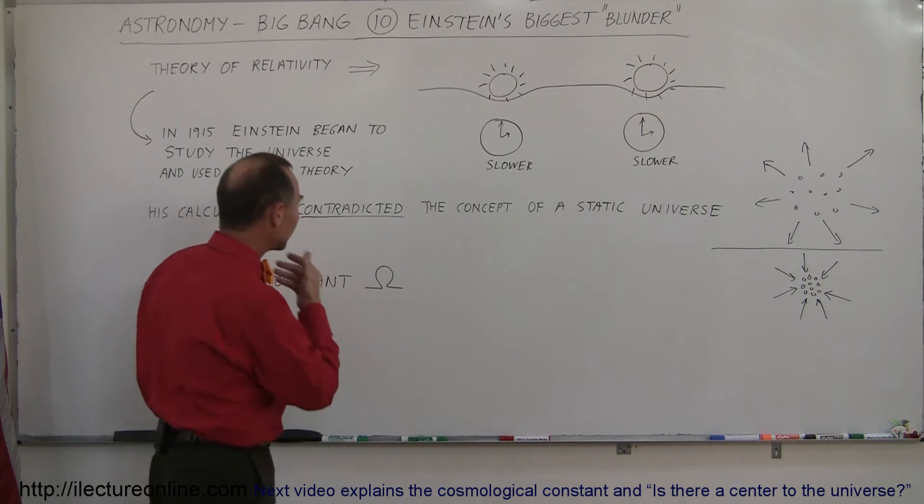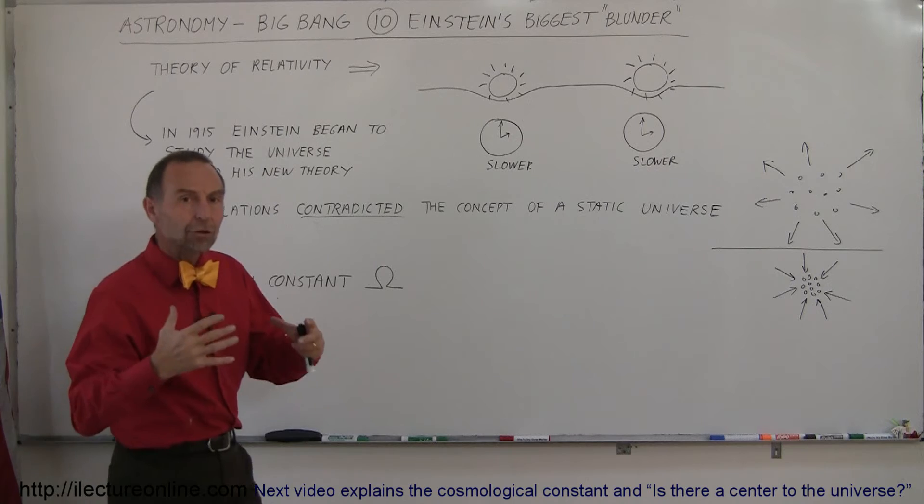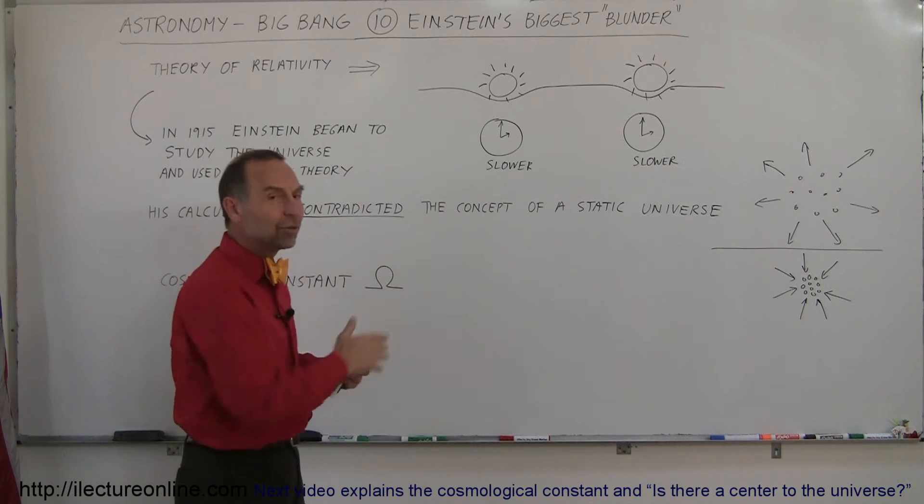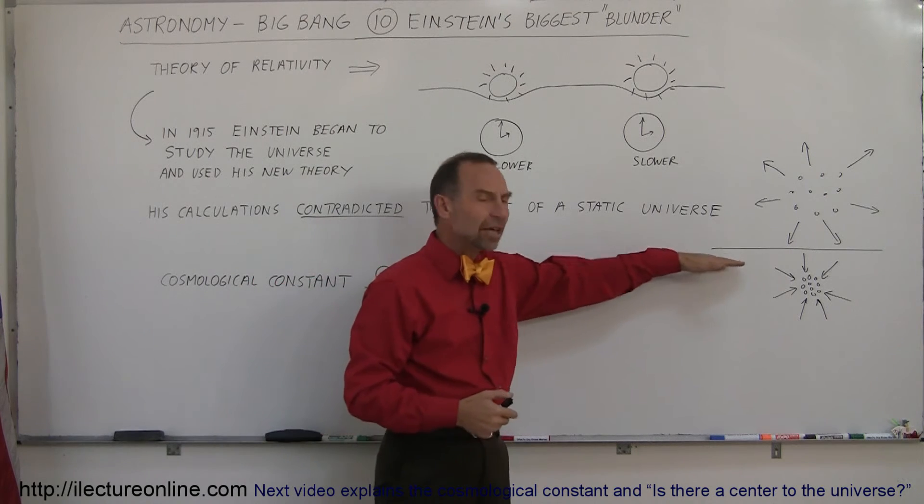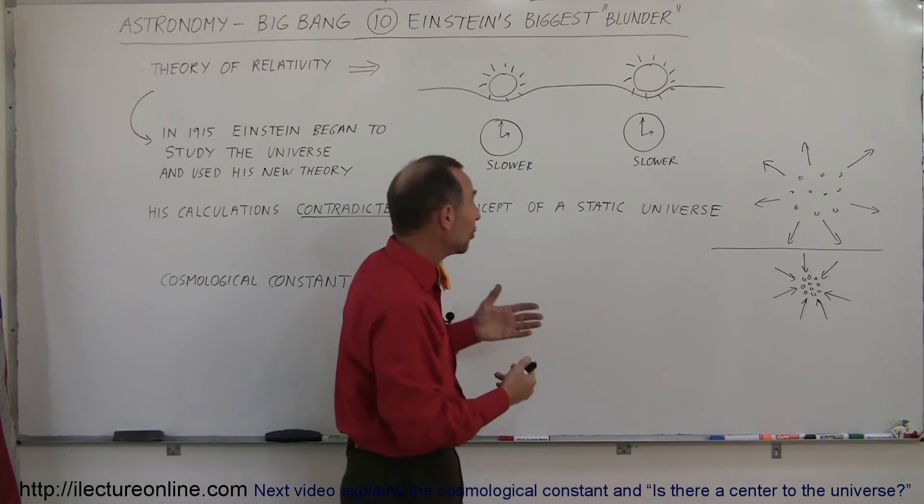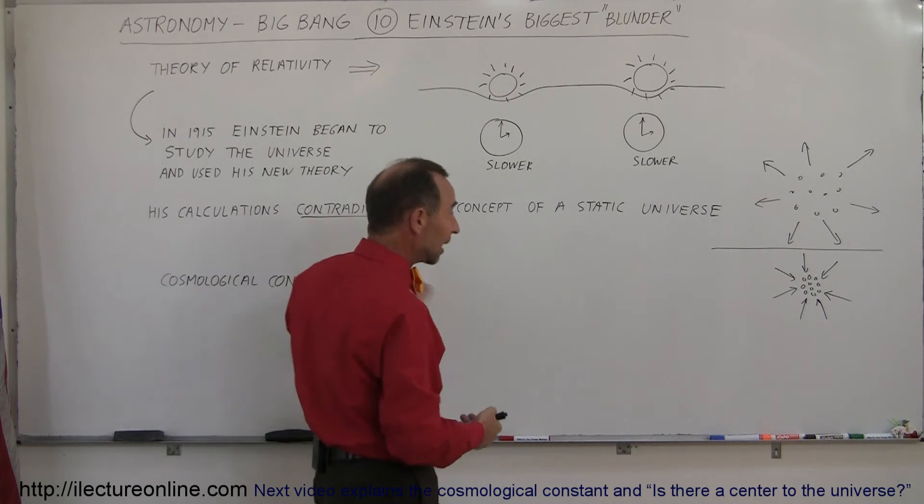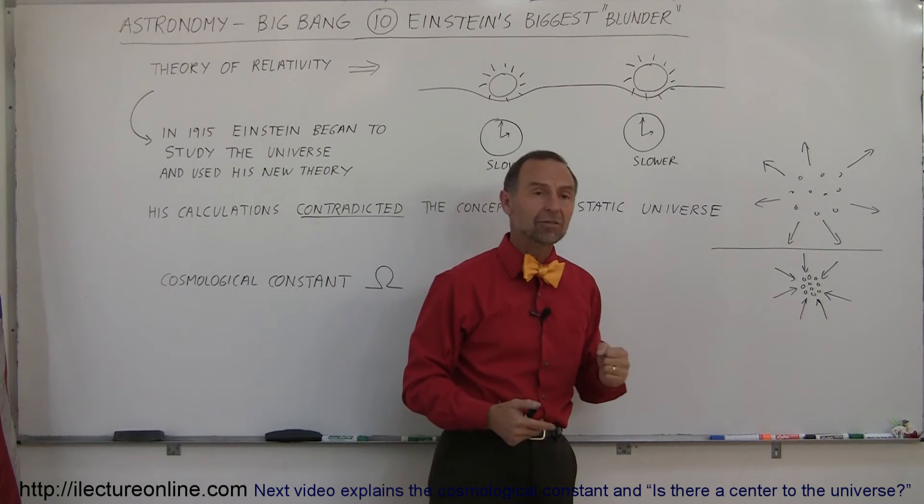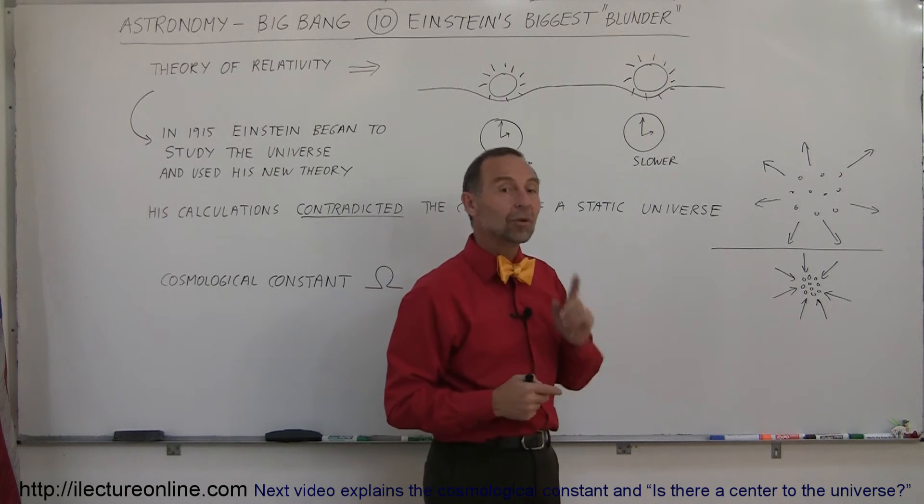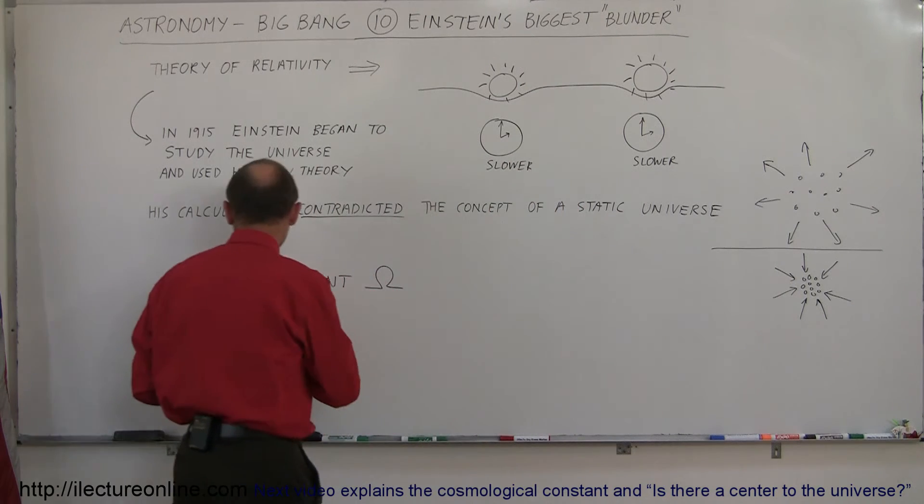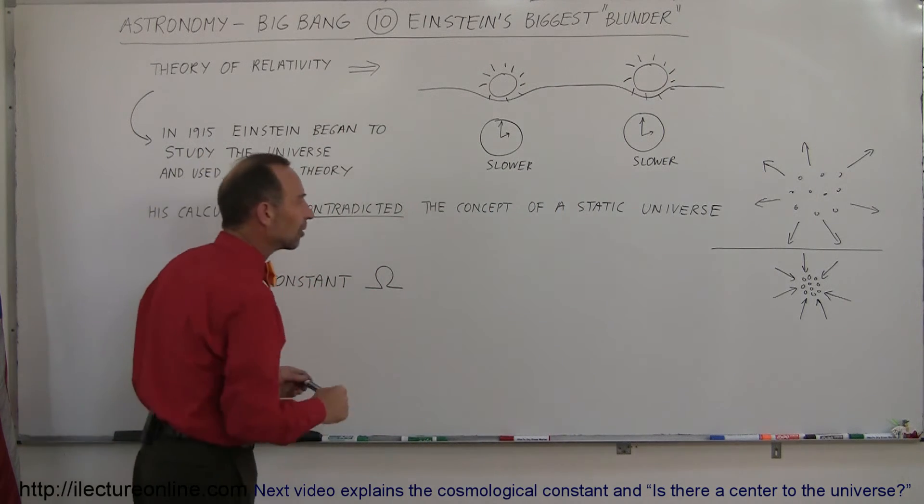And so what he did was, okay, I believe that the universe is static. Everybody else seems to believe so. Everybody else's concept seems to say that, yes, we must be in a static situation. Even though my new theory, my calculations don't make that possible, I need to do something. There must be something wrong with my calculations. And what he did was he added a constant and he called it a cosmological constant.